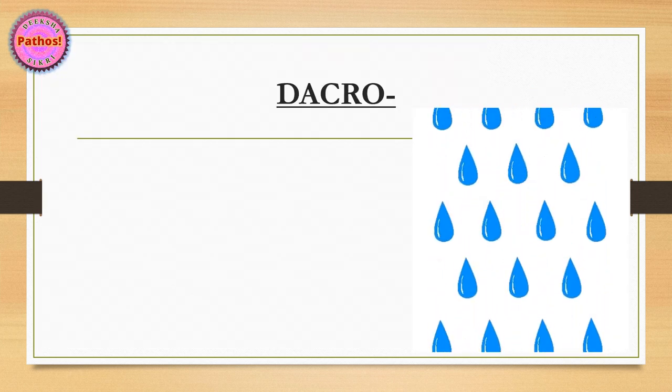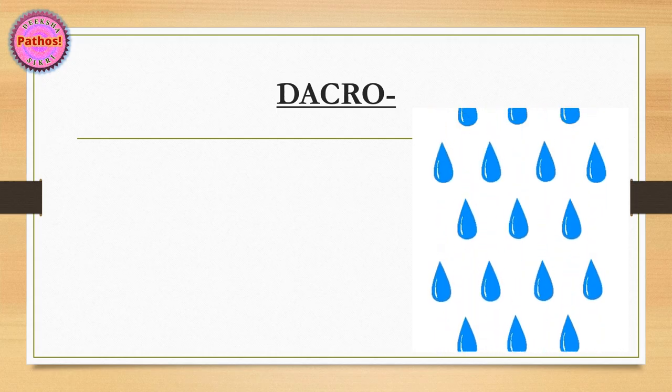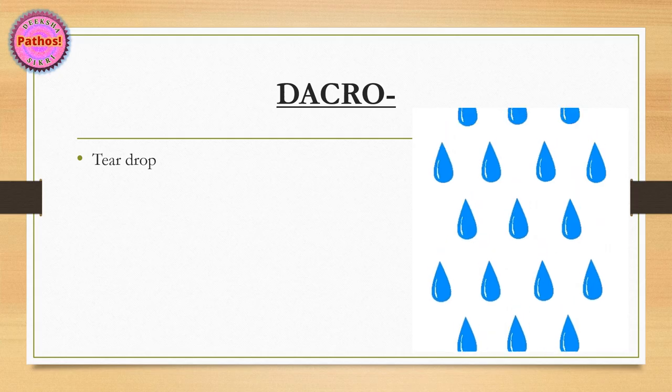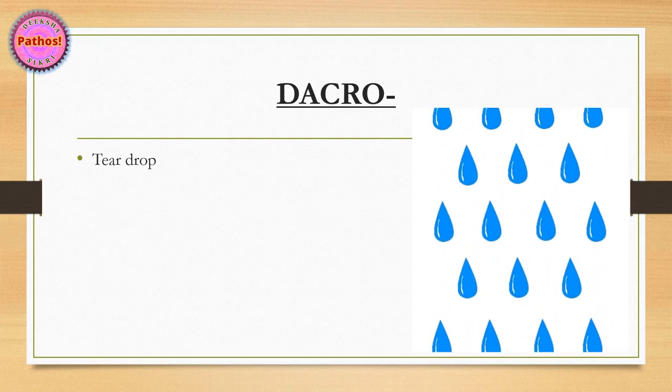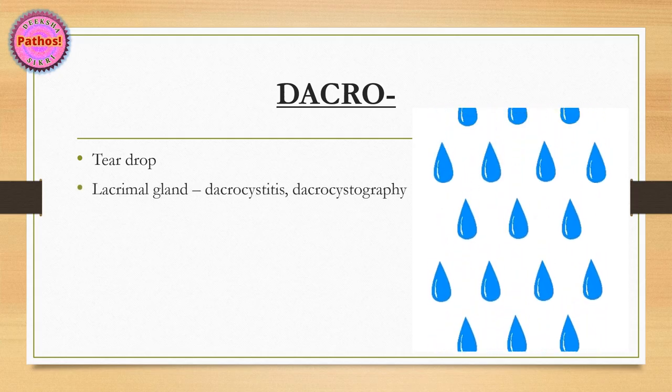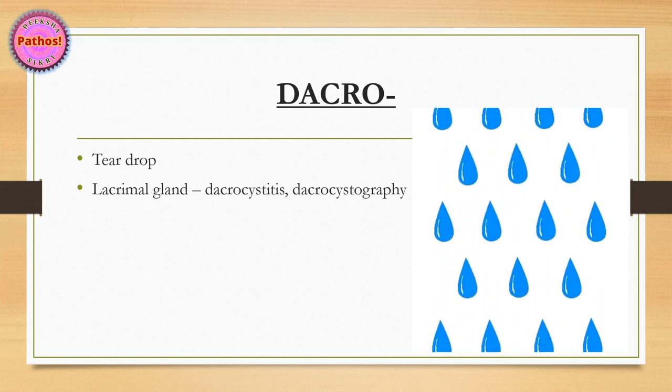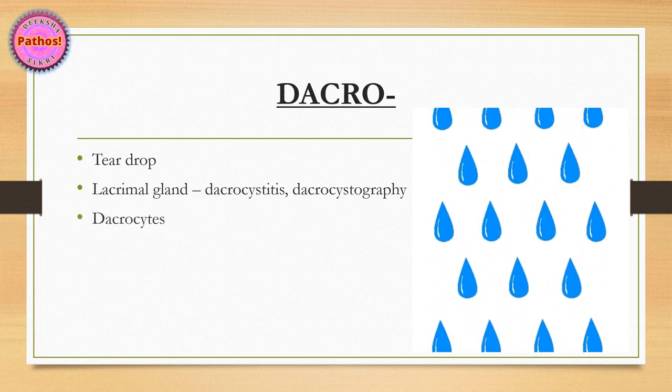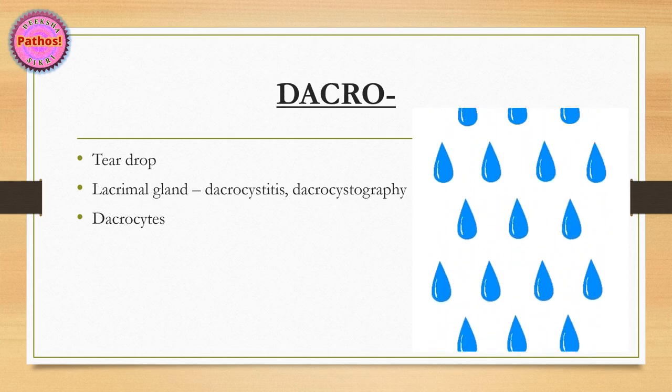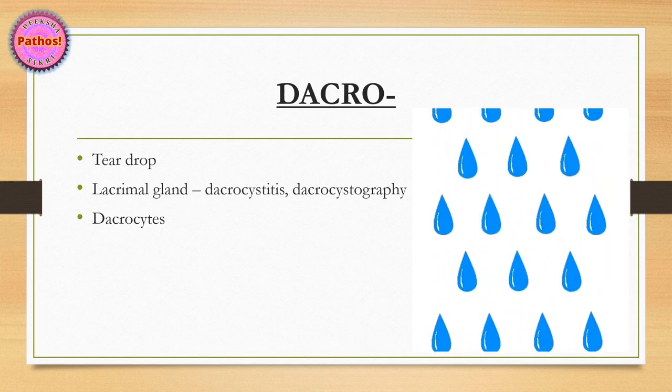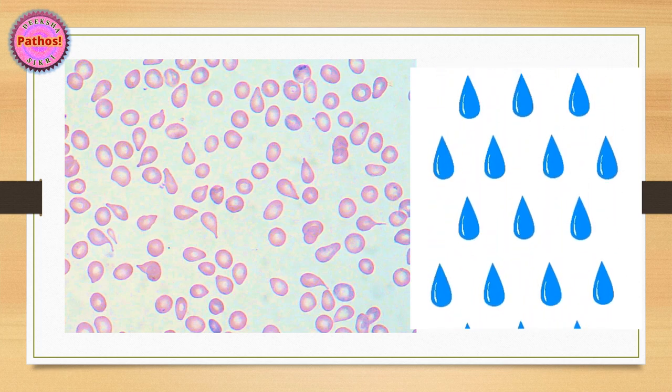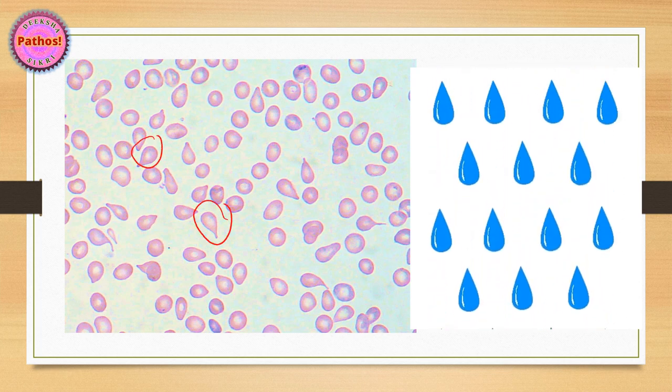Next, the term Dacro basically means teardrop. We can add suffixes to this term and come up with Dacrocystitis, Dacrocystography derived from the lacrimal gland, or Dacrocytes, which is the RBC shaped like a teardrop cell.